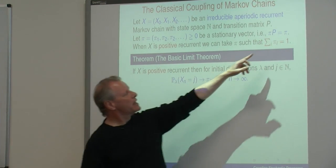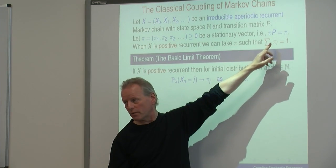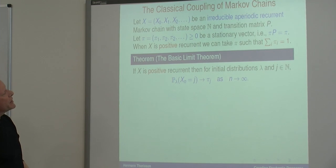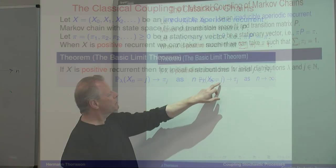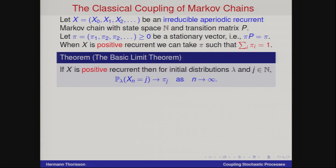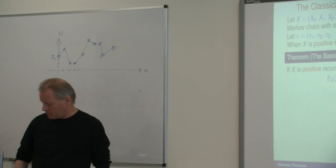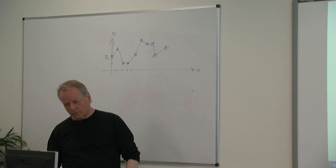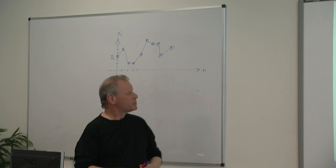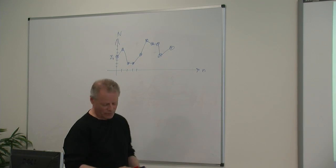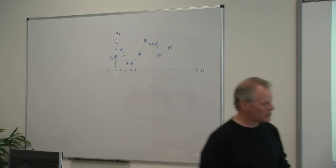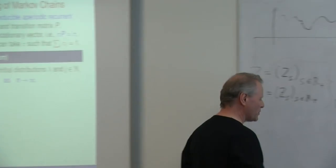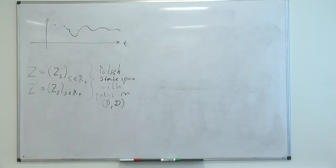In the positive recurrence case, we can choose pi so that the sum is 1. Here is the basic limit theorem: if X is positive recurrent, then the probability of being in j at time N tends to stationarity to pi_j. I want to prove this — just show you the idea of proof. This is the first example of coupling that I was exposed to consciously.